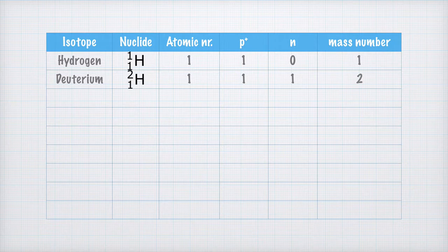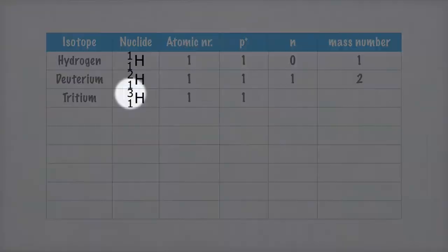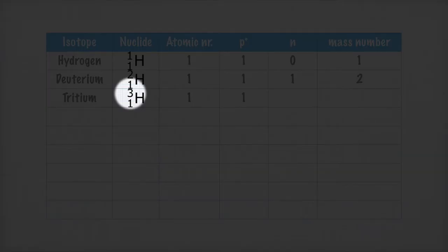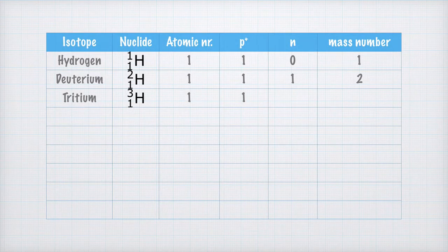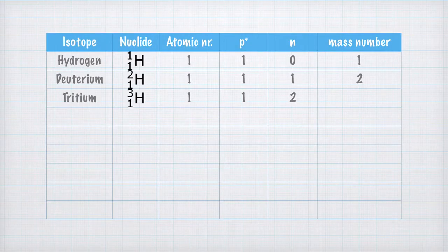There is a third hydrogen isotope called tritium. Its mass number is 3. We fill in that the atomic number, still, is 1, and the number of protons also is 1. The mass number is 3, which means that in tritium there are 2 neutrons. And we see that 1 plus 2 equals 3, which is the mass number.